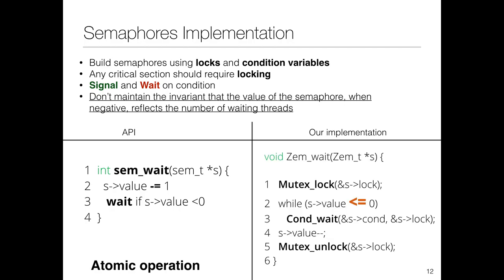For sem_wait: instead of first decrementing the value and then waiting, we changed the order—we first check the condition. The condition was less than or equal to zero. It seemed logical that it should be equal to zero rather than less than or equal to zero, because the value of the semaphore never becomes negative in this implementation. But two textbooks use less than or equal to zero, even while mentioning the value never becomes negative.